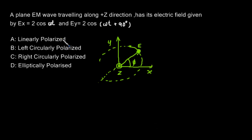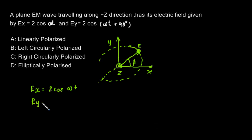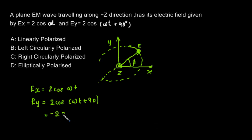In this case we have Ex = 2cos(ωt) and Ey = 2cos(ωt + 90°). Let's write that: x = 2cos(ωt). Now cos(ωt + 90°) can be written as −sin(ωt), so Ey = −2sin(ωt). So we have our Ex and Ey components.